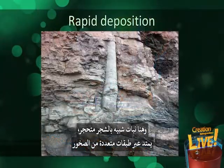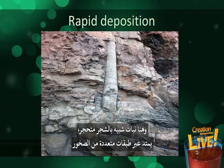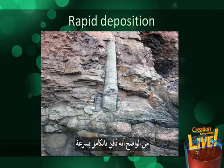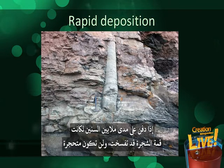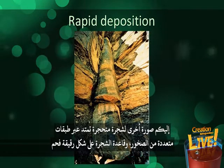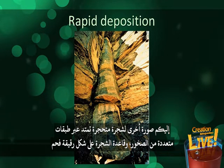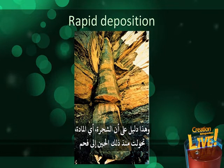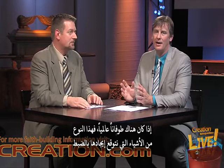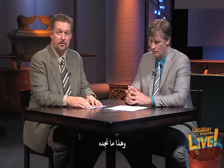Here's a fossilized tree-like plant extending through multiple layers of rock. Obviously the entire thing must have been buried rapidly. If it was buried over millions of years, the top of the tree would have rotted and wouldn't have been fossilized. Here's another picture of a fossilized tree extending through multiple layers of rock, with the base of the tree in a coal seam — this is from Tennessee. This is evidence that the tree, the material that has since turned to coal, and the sediment encasing the rest of the tree were all deposited before the tree rotted. If there was a global flood, this is exactly the kind of thing we would expect to find — and that's what we find.